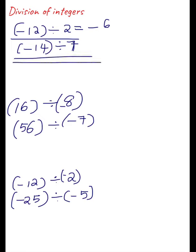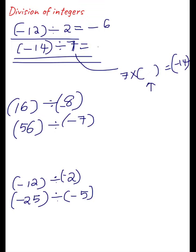Similarly, for the next one, you need to find: 7 × ? = -14. This is the multiplication statement for this division. You know that 7 × 2 = 14, but in order to get -14 you should put a negative sign. So the answer for this will be -2.